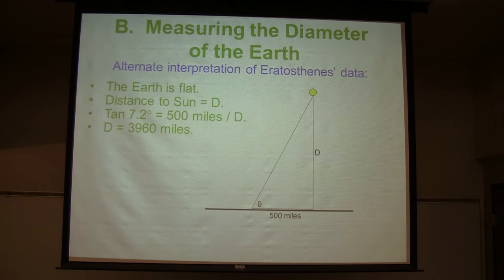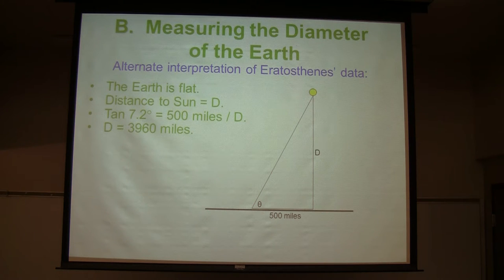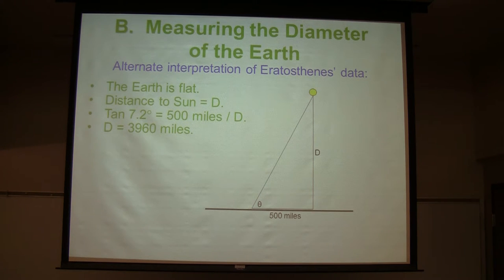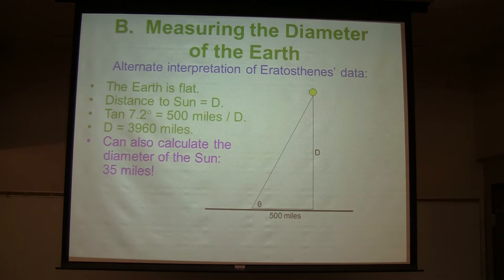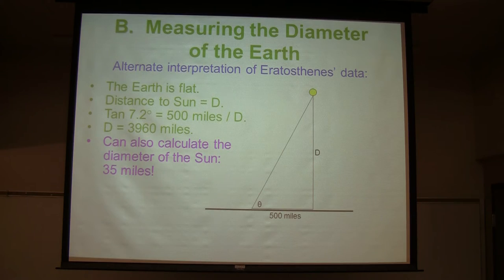There's nearly always more than one way to interpret the same set of data. Eratosthenes didn't do this, but you could alternatively conclude the Earth is flat — and when you pace off that distance, the reason the Sun was overhead at one place and not another is because you've walked out from under it. You could calculate from the 7.2 degrees and 500 miles that the Sun is 3,960 miles away, and since the Sun is a half degree in the sky, you could calculate its diameter as 35 miles. You actually get more answers that way, but there's usually only one correct way of interpreting data — sometimes people see the same data and come to different conclusions, and sometimes one of them is right and the rest are wrong.